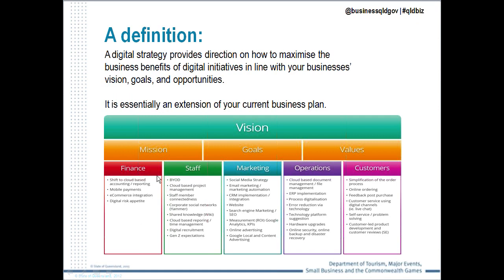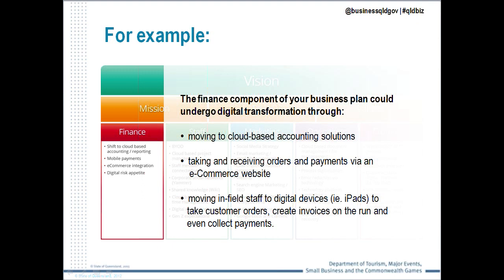If you follow my mouse on the screen, you will see the various sectors of a traditional business plan: vision, mission, goals, values, and sub-sectors including finance, staff, marketing, operations and customers. Within each of these elements a business plan could contain various digital initiatives. For example, from a finance perspective the opportunities to go digital are endless — from moving from a traditional accounting solution like MYOB or QuickBooks to cloud-based solutions like Xero or FreshBooks, to considering mobile payments or e-commerce integration. The digital strategy brings these often disjointed elements together into one cohesive strategy.